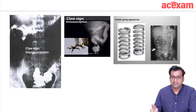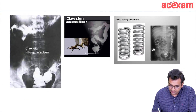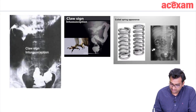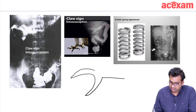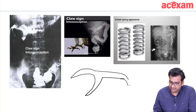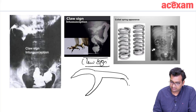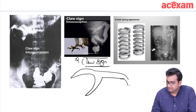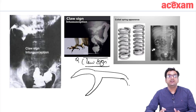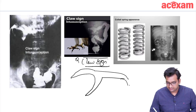They will give clinical history along with a barium picture showing a claw sign, which is seen in intussusception. Claw sign is very important and easy to interpret. Coiled spring sign may also appear, but claw sign is the most emphasized sign for intussusception.